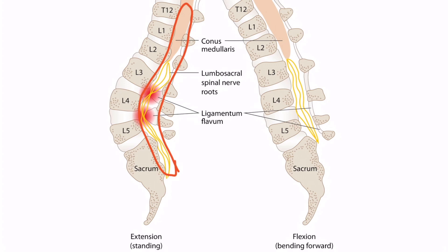Spondylolisthesis is simply slippage of a vertebral body. Most commonly, the superior vertebral body slips anteriorly on top of the adjacent inferior vertebral body — for example, L3 could slip down and anteriorly. The vertebra may also slip posteriorly, but this is less common. When either scenario happens, the nerve roots are often affected, resulting in radiculopathy.